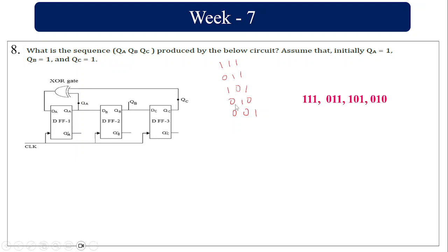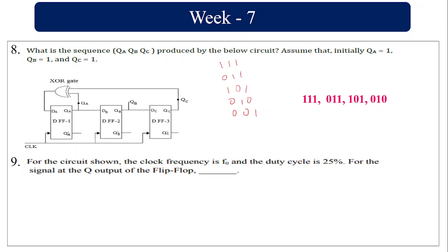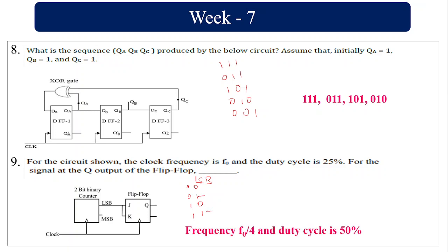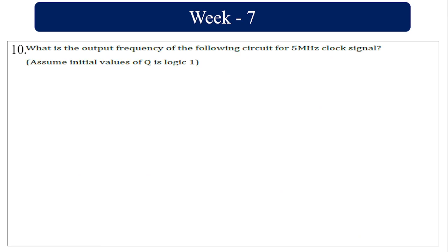For the circuit shown, the duty cycle: the 2-bit counter goes 0 0, 0 1, 1 0, 1 1. The LSB is J — whenever LSB is 1, the clock toggles. It gets toggled twice. The output frequency is f₀ divided by 4, and the duty cycle is 50%.